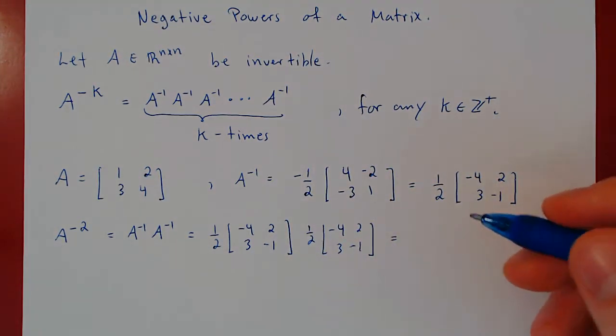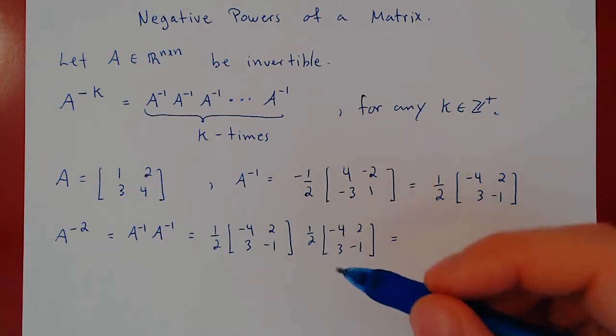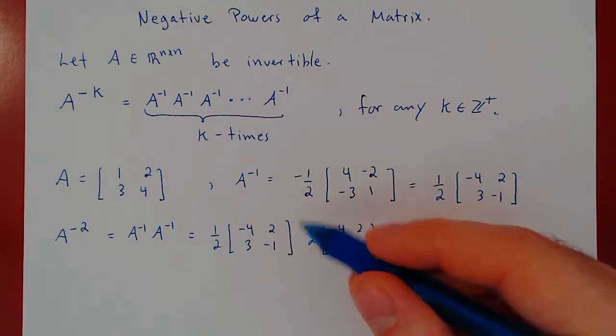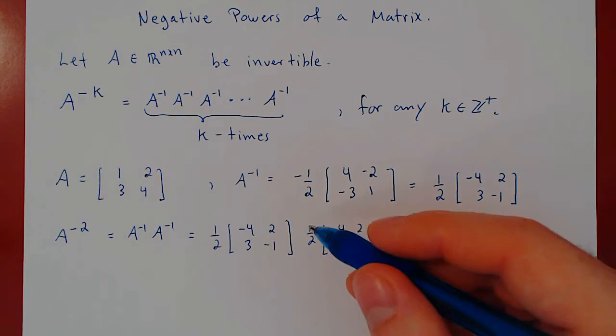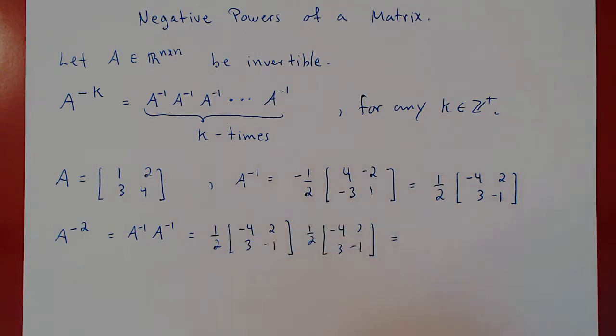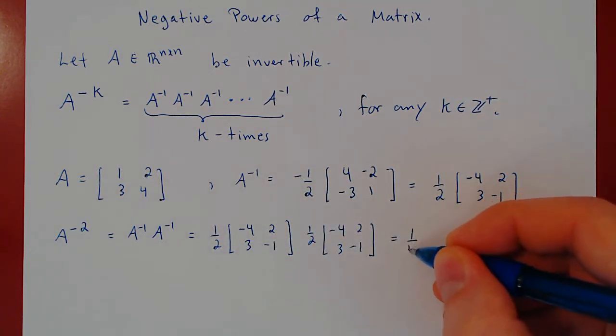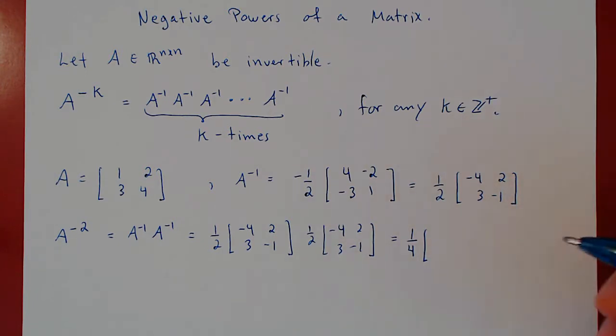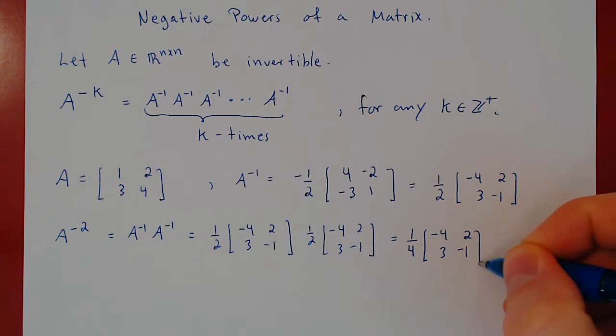But, the first thing, as always, is do not drag fractional scalar multiples in the multiplication. Simply bring them up front. So, this will give you a 1 half times 1 half, 1 quarter, times negative 4, 2, 3, negative 1, times itself.